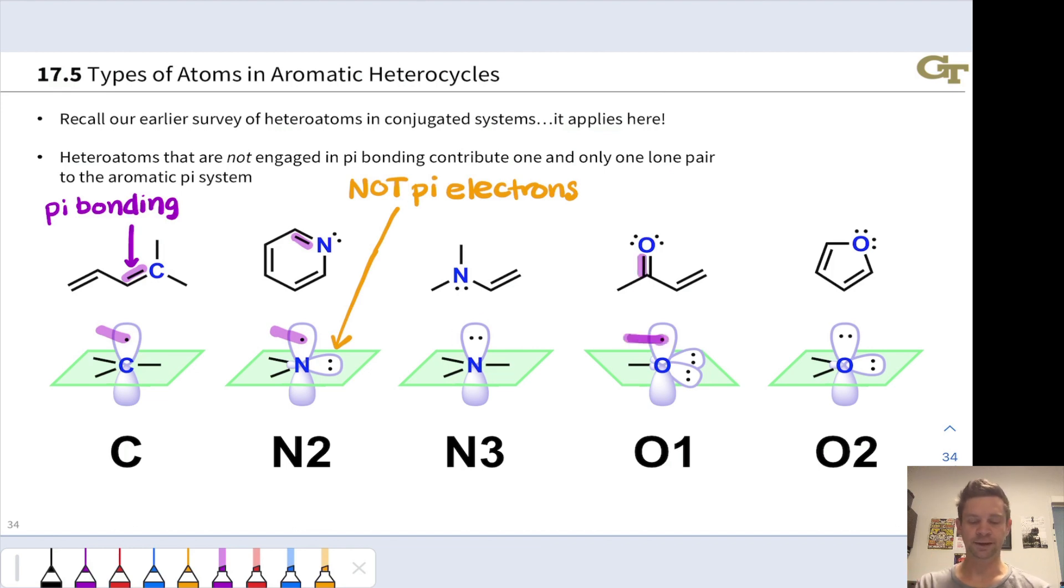The N3 nitrogen has a lone pair that is part of the pi system. We know this because that nitrogen is not involved in pi bonding, three single bonds. So this lone pair can occupy a p orbital, and it will do so when there's a double bond next door, or a p orbital next door more generally, such that it can delocalize itself.